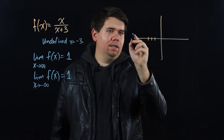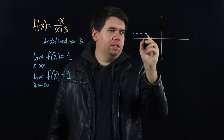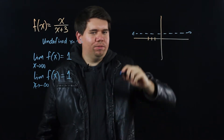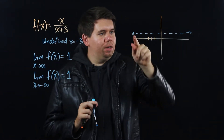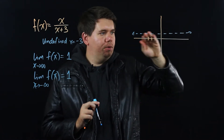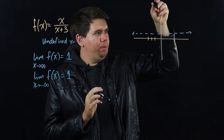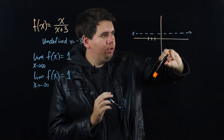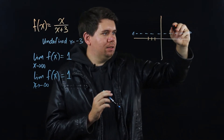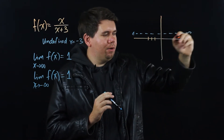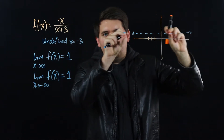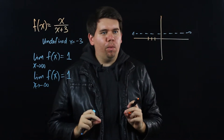This tells us that as we go far out to the left and to the right, we'll be getting closer and closer to the line y = 1. We may be coming down to it, going up to it, or oscillating onto it, but we're approaching y = 1.